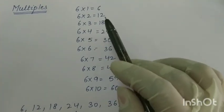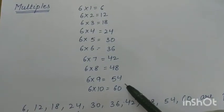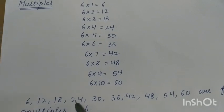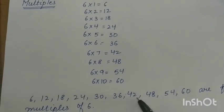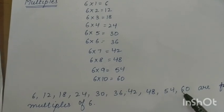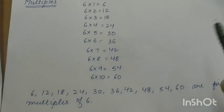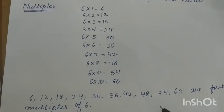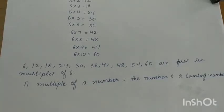Here I have written the table of 6. This is the table of 6, so 6, 12, 18, 24, 30, 36, 42, 48, 54, and 60. These are the first 10 multiples of 6.